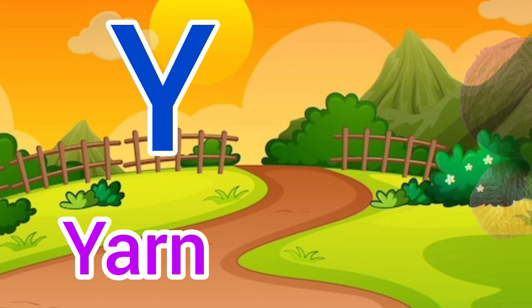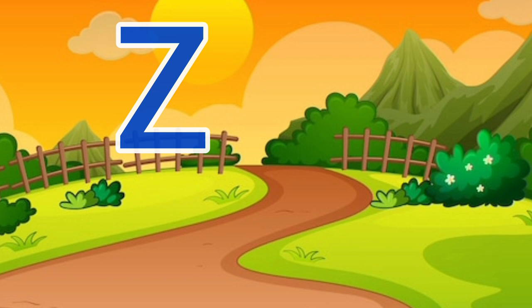Y for yarn, yarn means bhaga. Z for zebra, zebra means chittidhar ghoda.